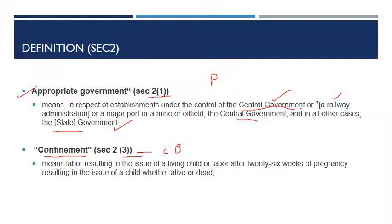Confinement means labor resulting in the issue of a living child, or labor after 26 weeks of pregnancy resulting in the issue of a child whether alive or not. So after 26 weeks, when a child is delivered — including cases of miscarriage — it is covered under confinement.